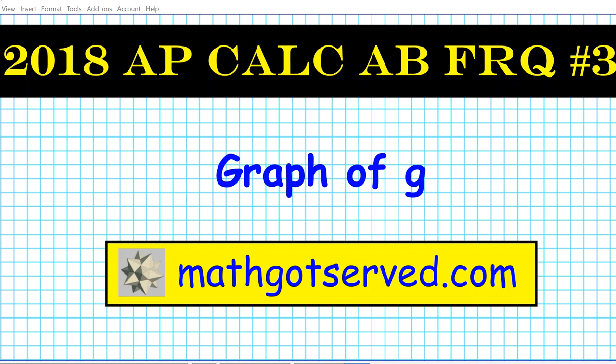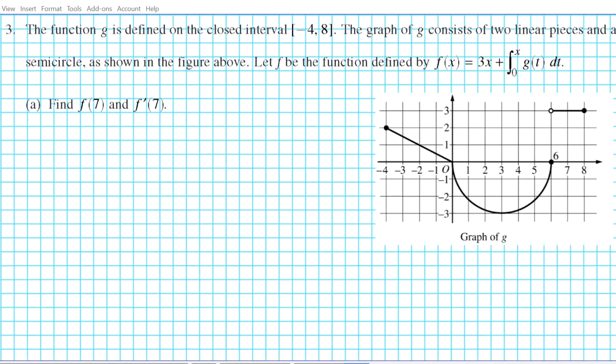Good day students, welcome to mattgotserved.com. In this clip we're going to be going over problem number three of the 2018 AP Calculus AB free response question, focusing on the graph of G. Question three reads: the function G is defined on the closed interval negative 4 to 8. The graph of G consists of two linear pieces and a semicircle as shown in the figure below. Let F be the function defined by f(x) equals 3x plus the integral from 0 to x of G(t) dt.